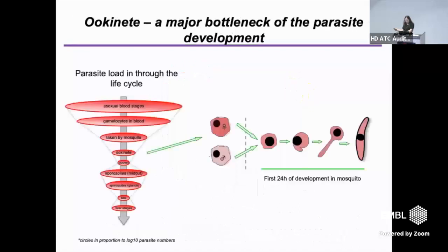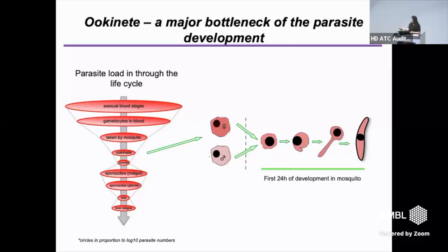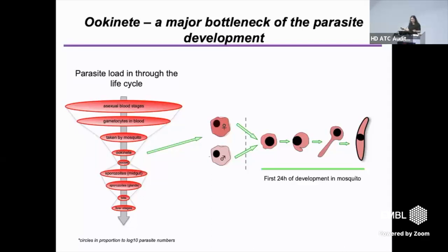In my lab, we're trying to understand how this process works with this limited number of factors, using as a model one particular transition: from gametocyte to ookinete. It's a very biologically relevant process and a major bottleneck of the Plasmodium life cycle. It's also one of the biggest changes in the cycle, when the cell needs to change its motility status, shape, metabolism — pretty much everything.